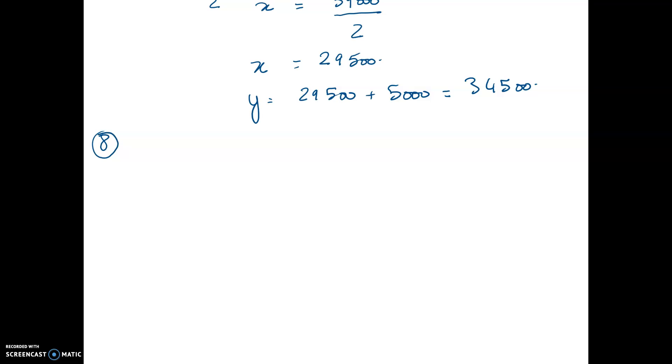Let's read problem number 8 together. A business website had twice as many hits on the first day of a promotion as on the second day. If the total number of hits for both days was 495,000, find the number of hits each day.